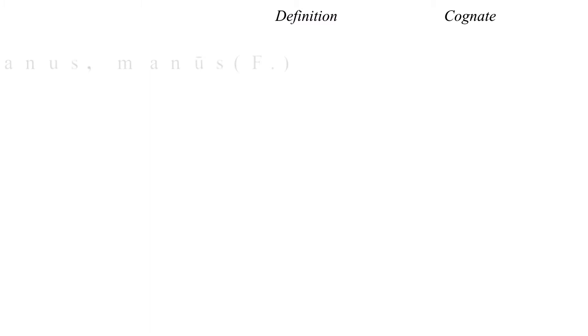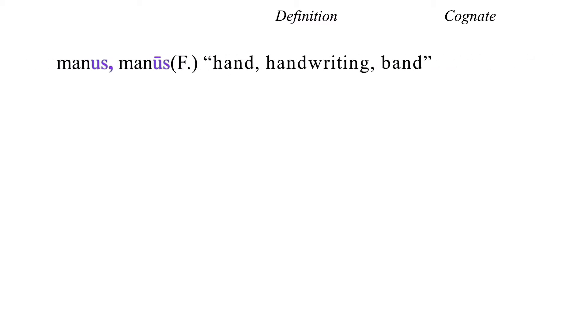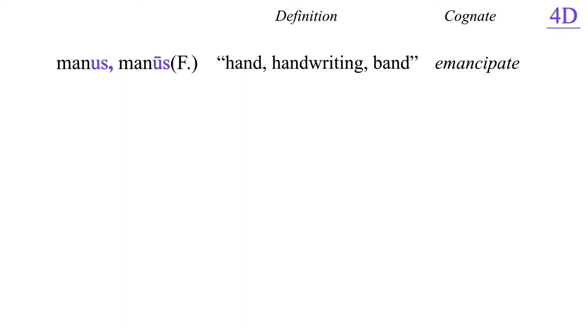Time for some vocabulary. Our first noun is manus, manus. It's feminine and it means hand, handwriting, and in the plural, band. The modern cognate is emancipate.